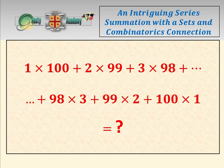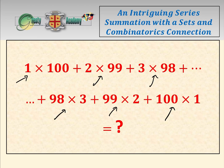This is an intriguing series summation: 1×100 + 2×99 + 3×98 + ... + 98×3 + 99×2 + 100×1. We're going to solve this and then discuss its connection with sets, subsets, and combinatorics, because it's very interesting.